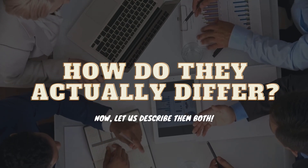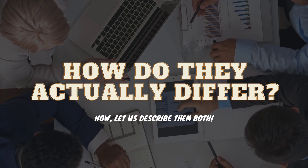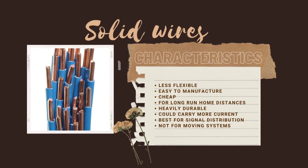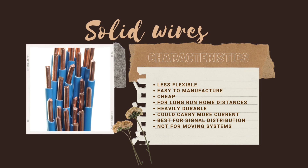But how do they actually differ? Let us describe them both. Solid wires are not that flexible. These are just easy to manufacture, and that is why they are pretty cheap. Suitable for long-run home distances and are heavily durable. They could carry more current and are more powerful for signal distribution, but are not good for any moving systems.